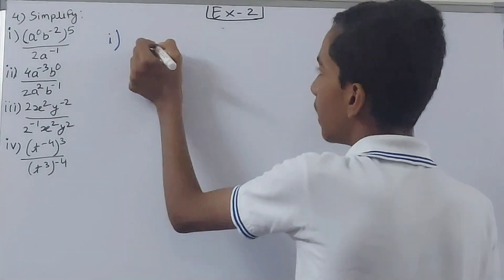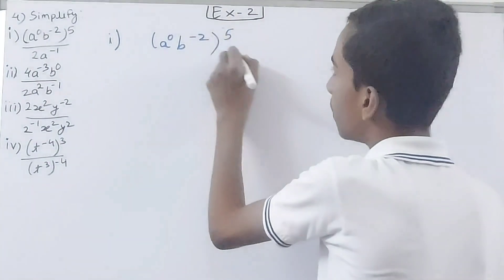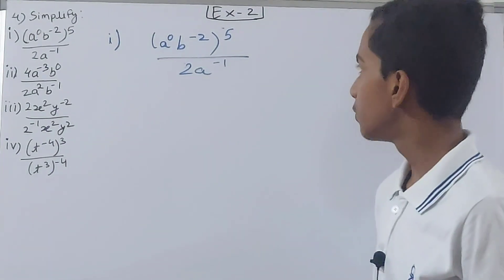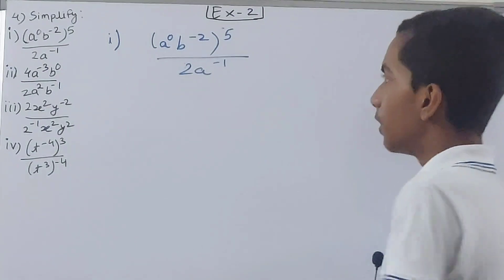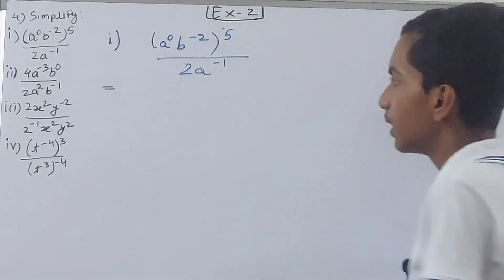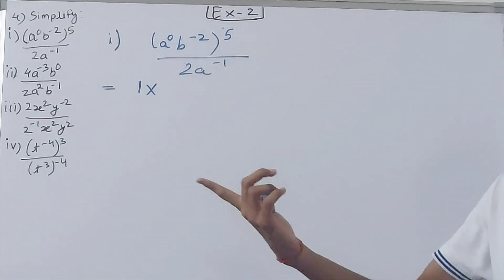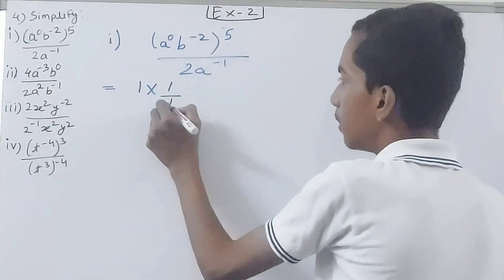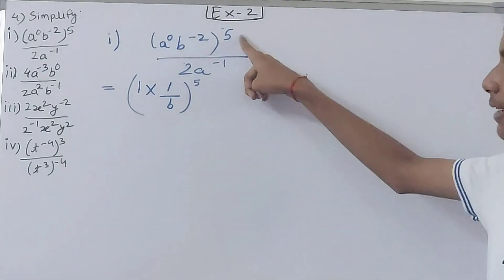First we have a to the power 0, b raised to the power minus 2, whole raised to the power 5, upon 2a to the power minus 1. Now, a to the power 0 will be 1, because we first solve the part inside the bracket. So a⁰ is 1, and then b to the power minus 2 — since minus 2 is there, I will reciprocate b to get 1 upon b, whole raised to the power 5.